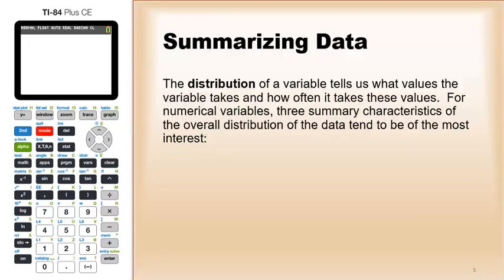One of the most important aspects of statistics is to summarize data and in particular to talk about what's going on with the distribution. The distribution of a variable tells us what values the variable takes and how often it takes these values. When it comes to numerical variables, there are three summary characteristics of the overall distribution of the data that tend to be of most interest.